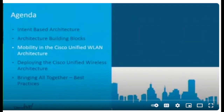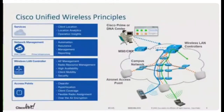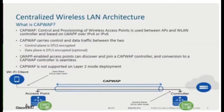The whole wireless LAN architecture is based on access points, controllers, then a management platform — either Cisco Prime or DNA Center — and then services on top of it like CMX or DNA Spaces. If you want to see demos of all of this, please go to the World of Solutions. Whatever I'm going to talk about today, there are team members doing demos in the World of Solutions.